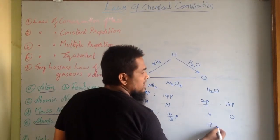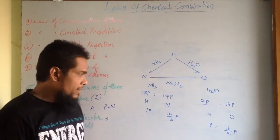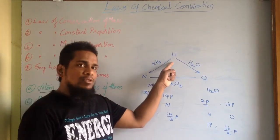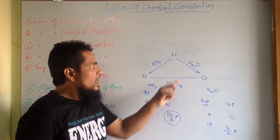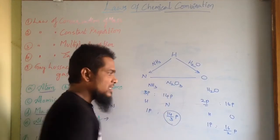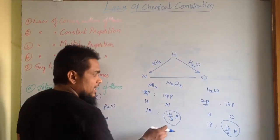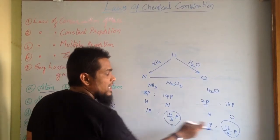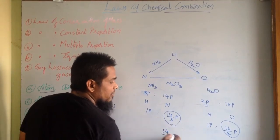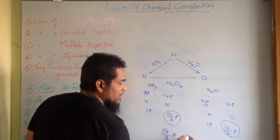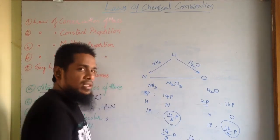One part of hydrogen is combining with 14/3 parts of nitrogen, and one part of hydrogen is combining with 16/2 parts of oxygen. So with one part of hydrogen, nitrogen and oxygen are combining in the ratio of 14/3 to 16/2.